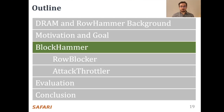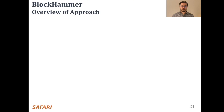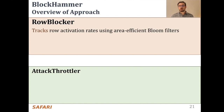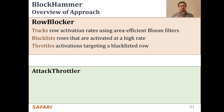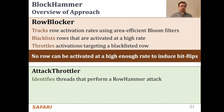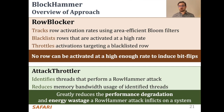Let's look into our mechanism, Block Hammer. Block Hammer's key idea is to selectively throttle memory accesses that may cause row hammer bitflips. Block Hammer consists of two mechanisms: Row Blocker and Attack Throttler. Row Blocker tracks row activation rates using area-efficient bloom filters, blacklists rows that are activated at a high rate, and throttles or enforces a certain delay between activations targeting a blacklisted row. By doing so, Row Blocker ensures that no row can be activated at a high enough rate to induce row hammer bitflips. Attack Throttler identifies threads that are activating blacklisted rows and reduces their memory bandwidth consumption by throttling their memory requests, greatly reducing the performance degradation and energy wastage a row hammer attack inflicts on a system.